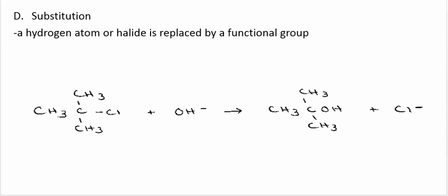A fourth type of organic reaction is substitution, where you have a hydrogen atom or a halide, like Cl or Br, replaced by another functional group. So in this case, the Cl is replaced with OH, and I get an alcohol.